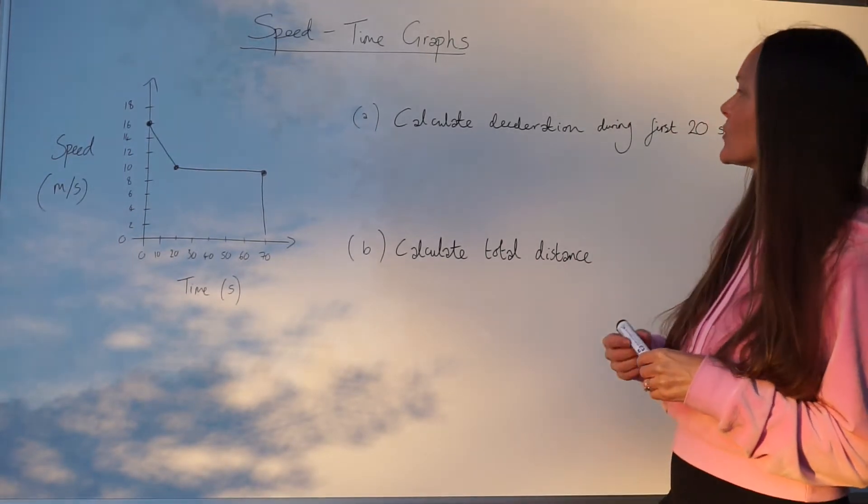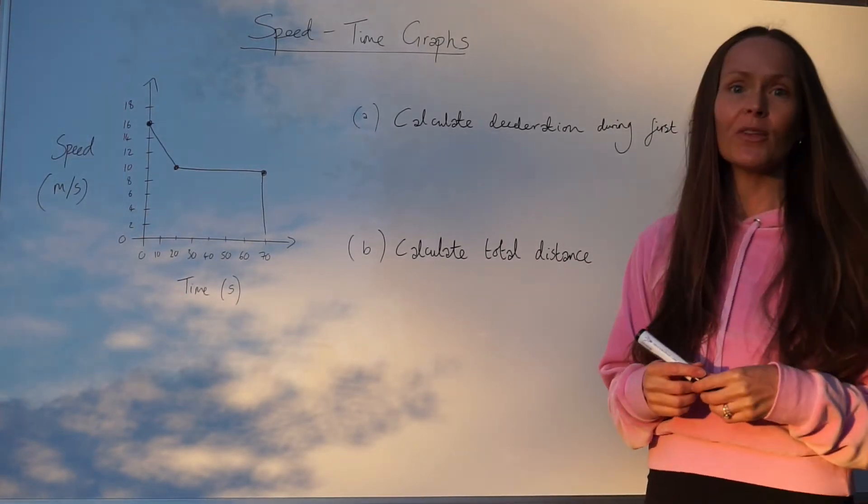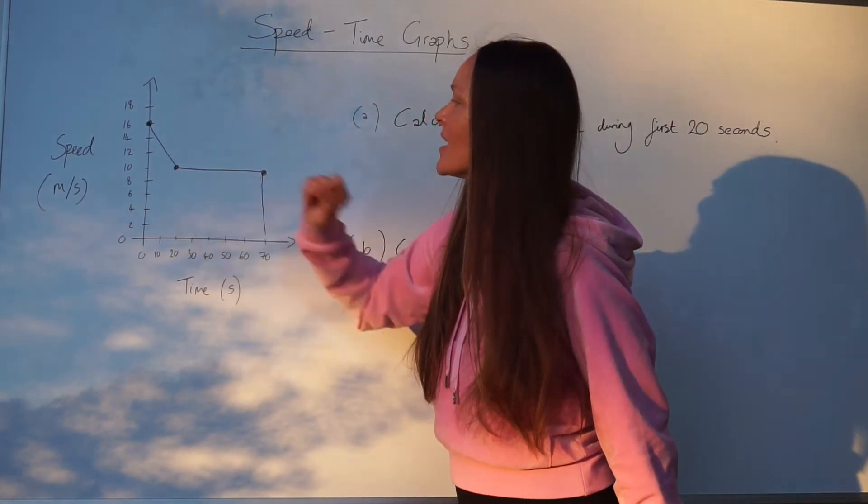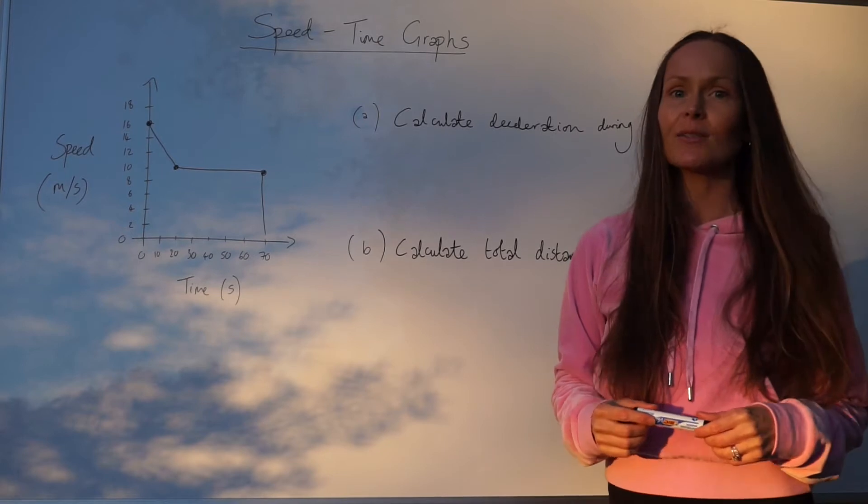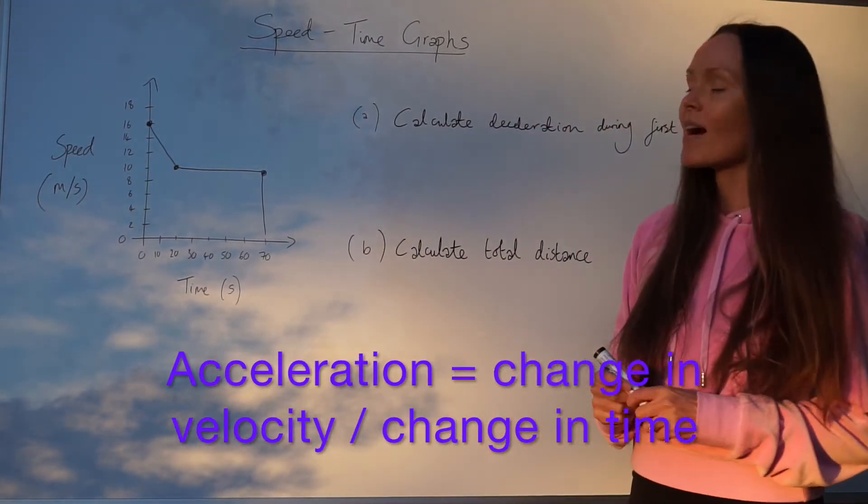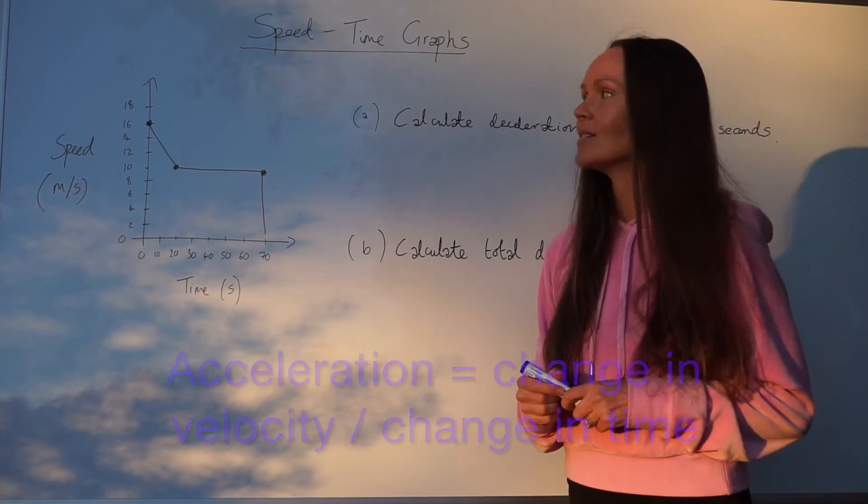In the first part, it asks us to work out the deceleration of the car in the first 20 seconds. To work out the deceleration, you need to work out the gradient of this line here. To do that, I'm going to use a method called rise over run.